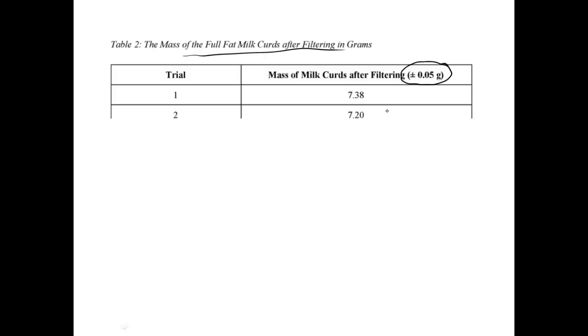You don't have to write it after every single measurement. So this just tells you for trial one that this mass recorded could be as low as 7.33 or as high as 7.43.